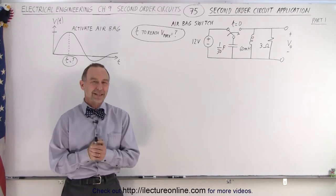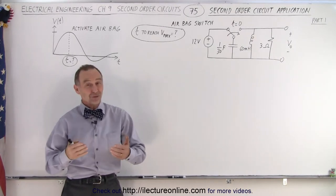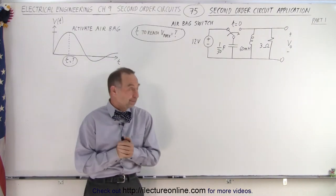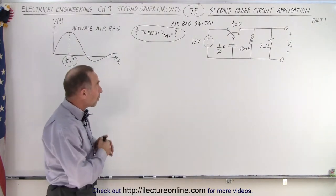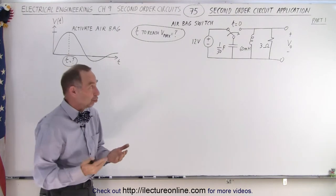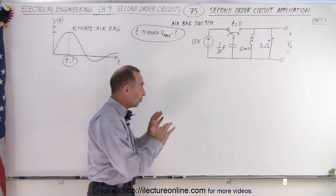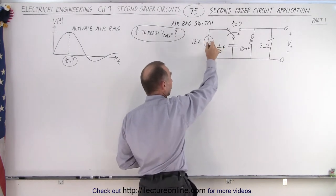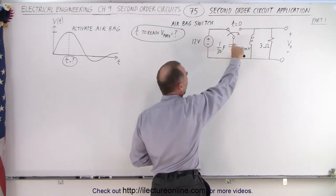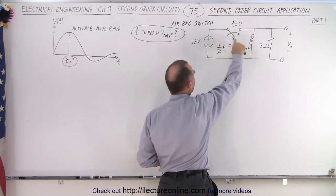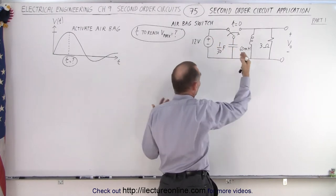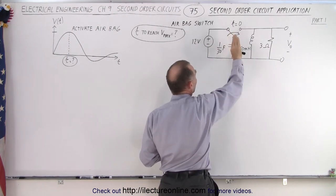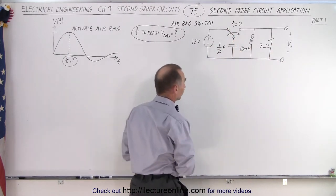Welcome to our lecture online. Let's now take a look at an interesting application of a second-order parallel circuit. Here we have what we would call an airbag switch. The way an airbag switch works is that we have a connection to a 12-volt battery — most cars have a 12-volt battery. Notice that we have a capacitor in parallel, or in series, relative to the voltage supply, and we have a switch that turns off the rest of the circuit.